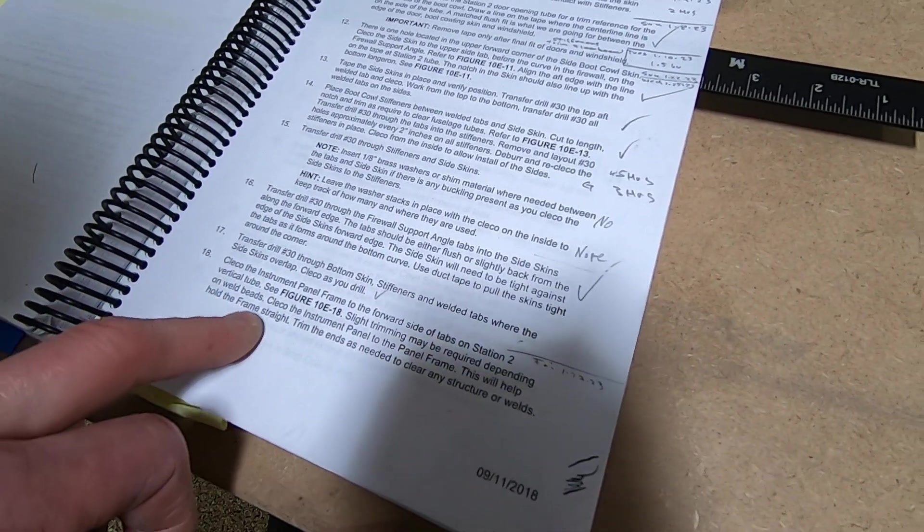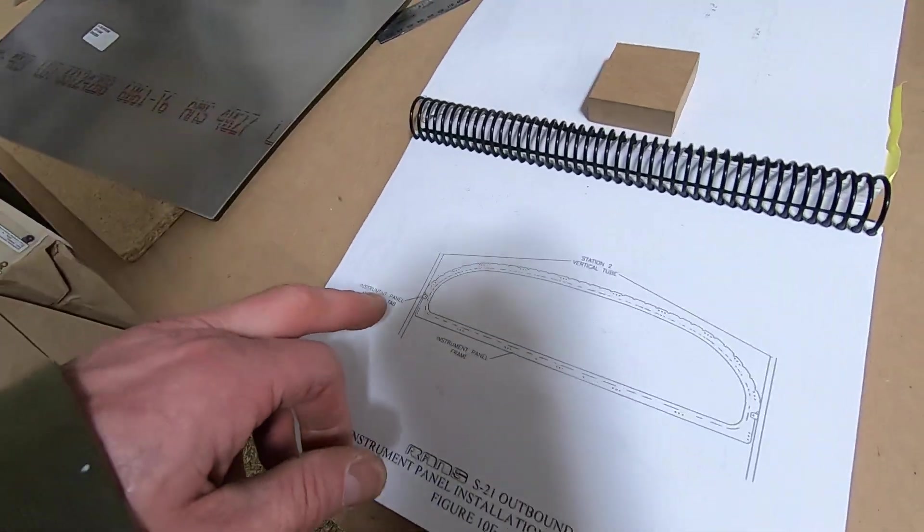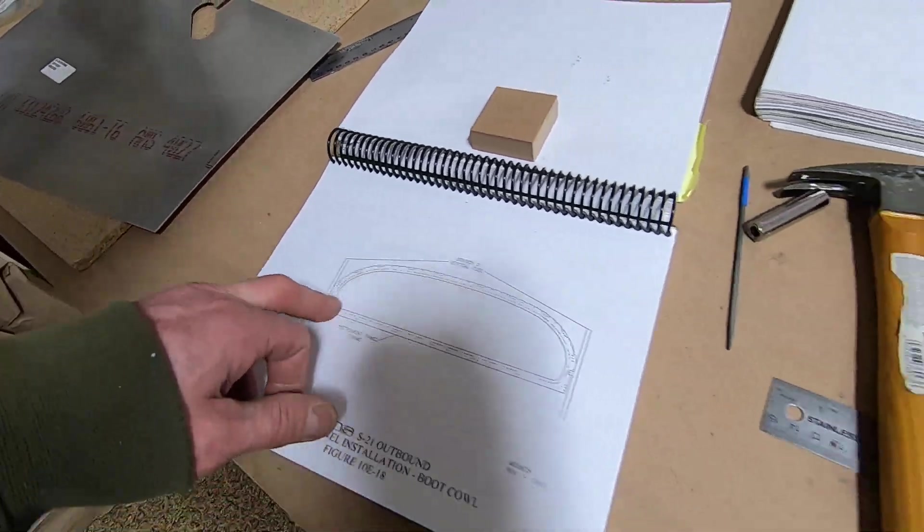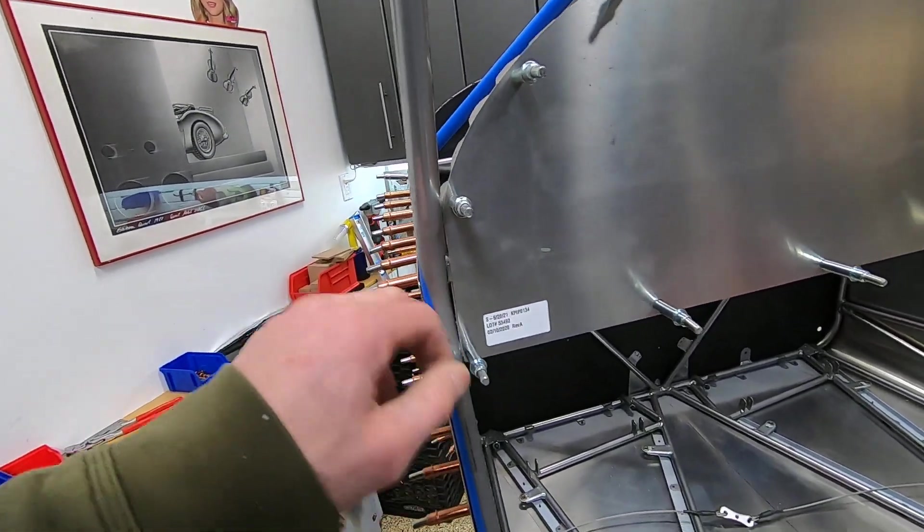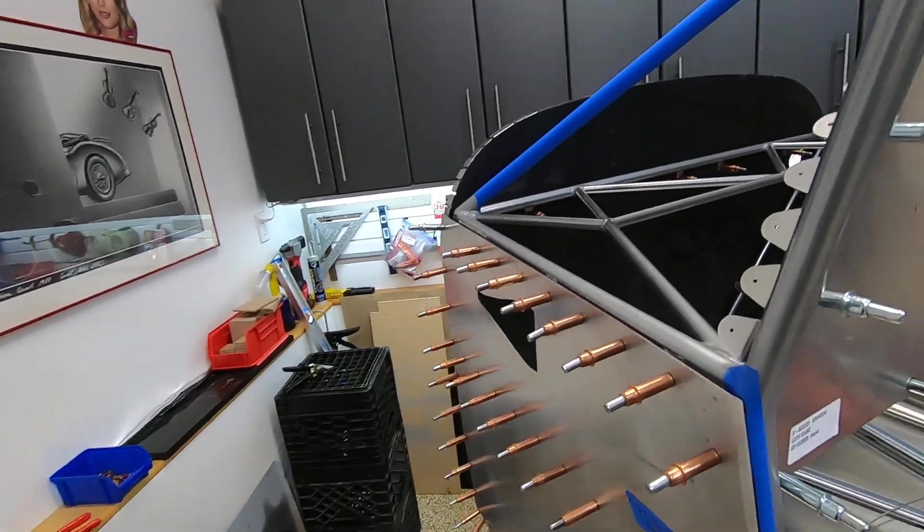But then it says Cleco the instrument panel, not the frame but the panel, to the panel frame. This will help you hold the frame straight, except the Clecos are in the way to put the panel on.